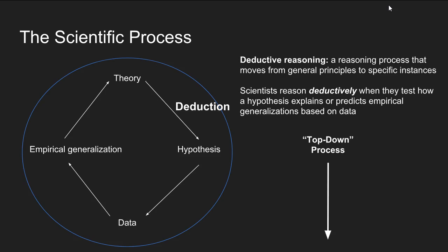In a deductive reasoning process, the researcher familiarizes themselves with the theory and based on the ideas from that theory, they form a hypothesis which they then test with data, from which they make empirical generalizations. It is a top-down process because you're moving from the general principles of a theory down to the specific instances captured and represented by the data you collect.